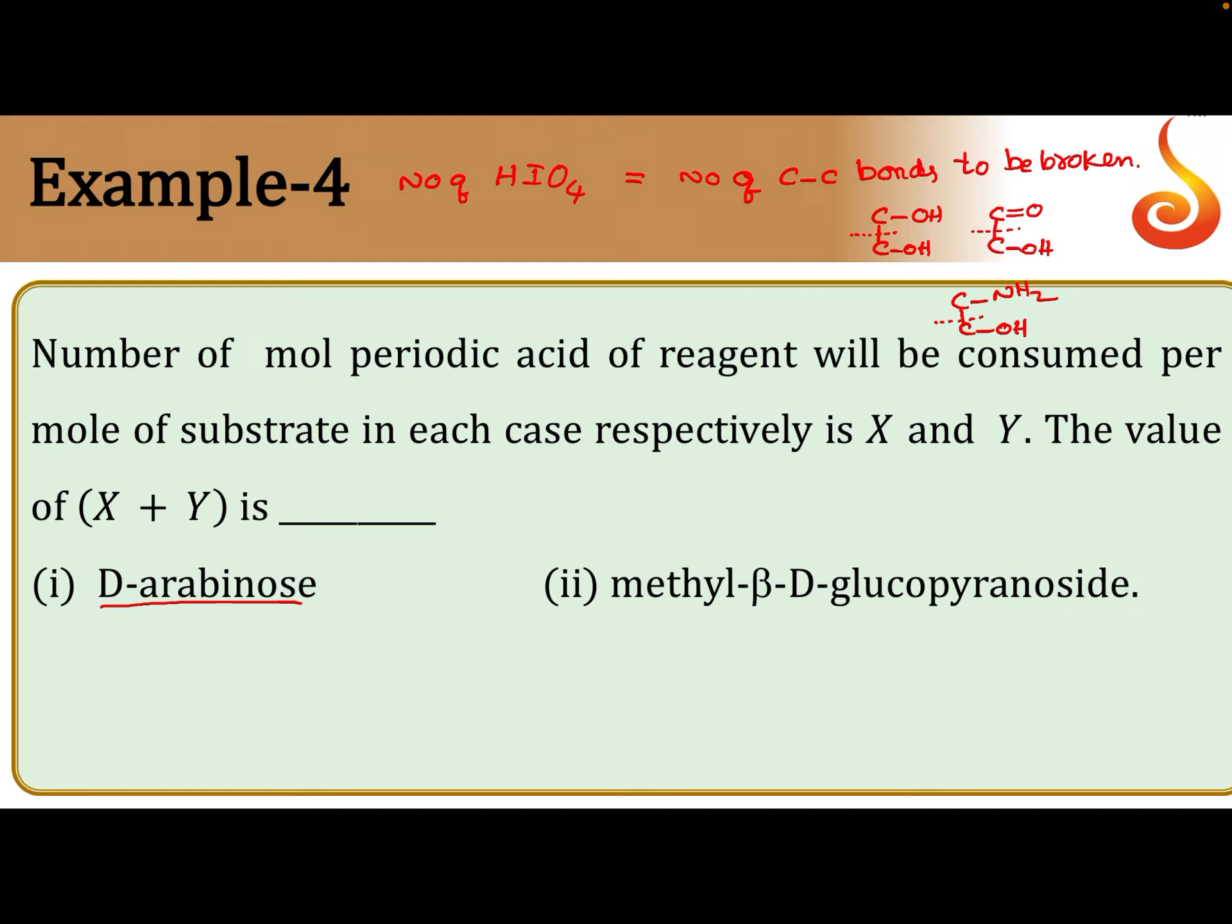Now we should know the structure of D-arabinose. D-arabinose is an aldopentose: CHO, CHOH, CHOH, CHOH, CH2OH. One, two, three, four, five carbons.